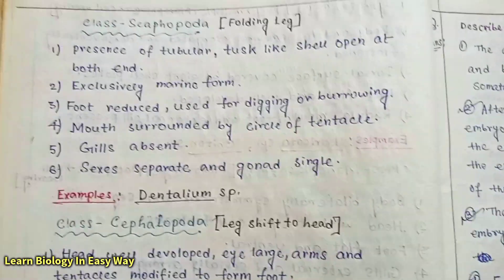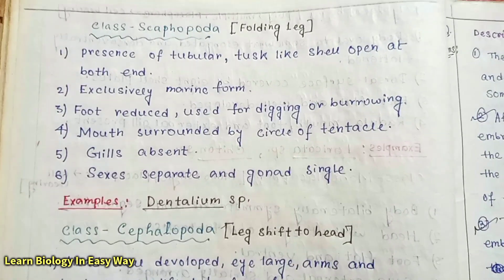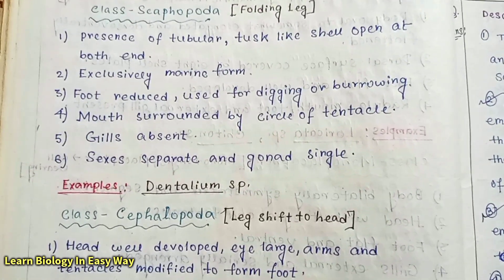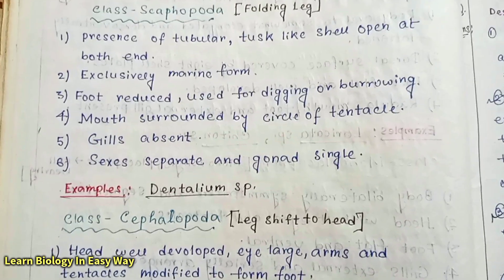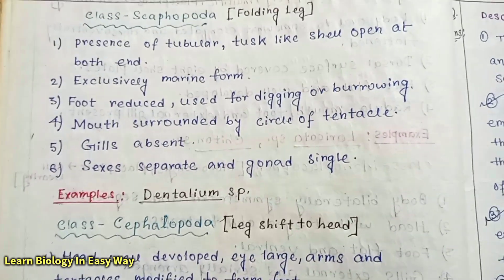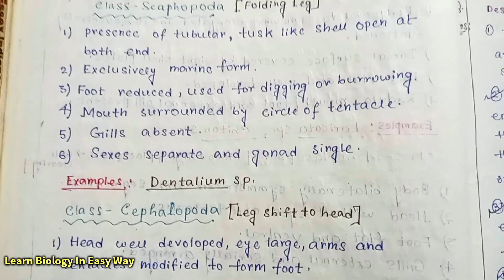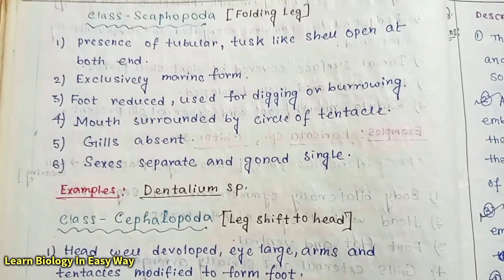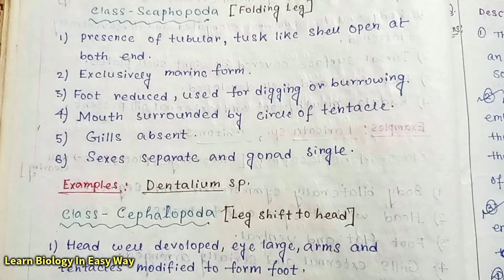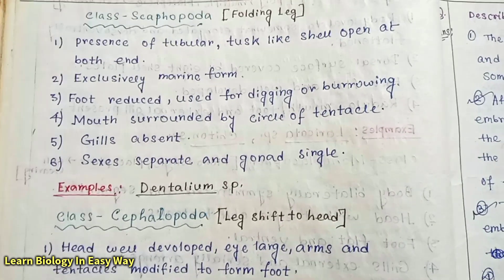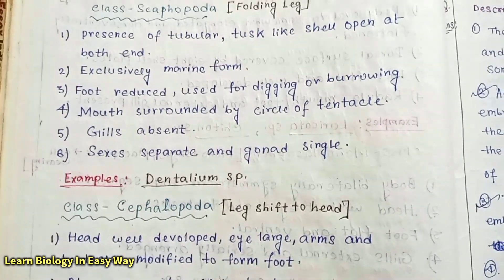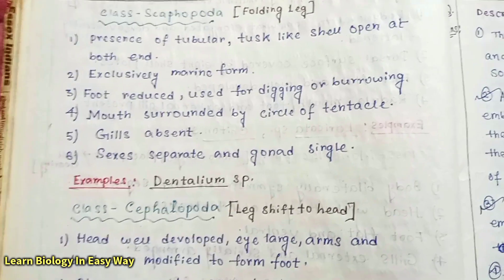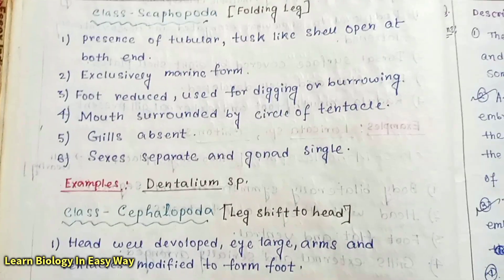Class Scaphopoda: Presence of tubular, tusk-like shell open at both ends. Exclusively marine in form. Foot is reduced, used for digging or burrowing. Mouth is surrounded by a circle of tentacles. Gills are absent. Sexes are separate and gonad is single. Example: Dentalium sp.